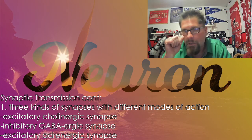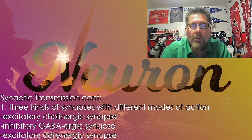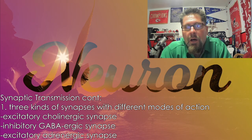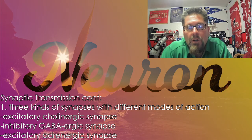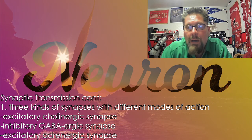There are three types we're going to look at. The cholinergic and the adrenergic are excitatory, and the inhibitory type is going to be the GABAergic synapse.